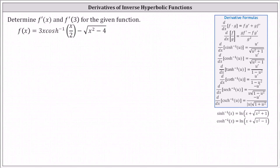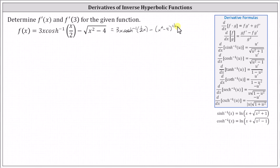Determine f prime of x and f prime of three for the given function. We have f of x equals three x times inverse hyperbolic cosine of x divided by two, minus the square root of the quantity x squared minus four. Let's first write the given function as three x times inverse hyperbolic cosine of one half x, minus the quantity x squared minus four to the power of one half. Remember, we have to convert radicals to rational exponents to determine derivatives.